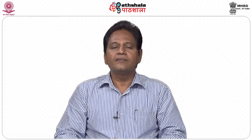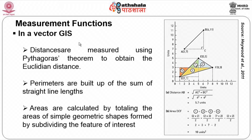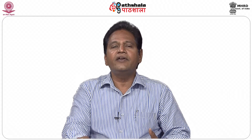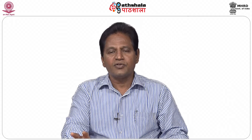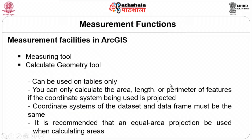Even for areas, it is not difficult. For perimeters, you know the length of each side, and once you add them up, you get the perimeter. For area, you divide the entire map into n number of triangles, calculate the area of each triangle, add them all up, and you get the total area. Measurements are made using the Euclidean method and simple formulas. In ArcGIS, you will have a measuring tool to find distance between points and geometric tools to calculate area and perimeter of polygons.